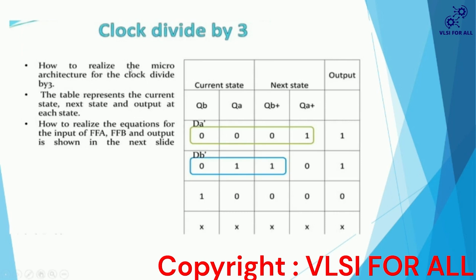Now let us see how to realize the clock divided-by-three. A state table is given, and from this table we can design the circuit. It shows how to derive the equations for the inputs of flip-flop A, flip-flop B, and the output. The first column is the current state, the next is the next state, and the last is the output. QB and QA are the present states of the two flip-flops.